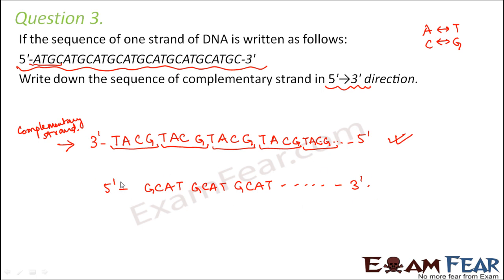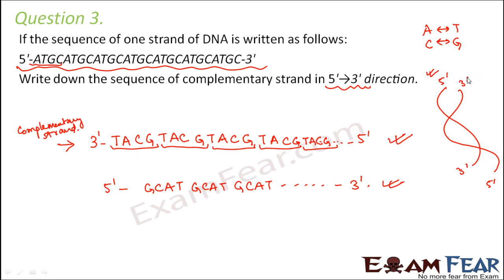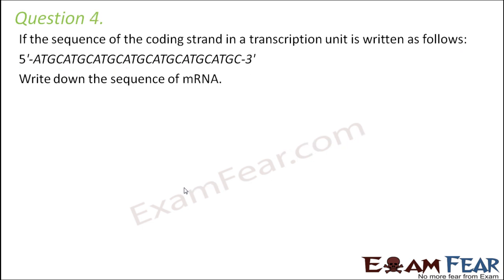To summarize: if one strand runs from 5' to 3', the complementary strand runs from 3' to 5'. The sequence of the complementary strand running 3' to 5' is given, but since the question asks for the sequence in the 5' to 3' direction, we simply reverse it — that's all.